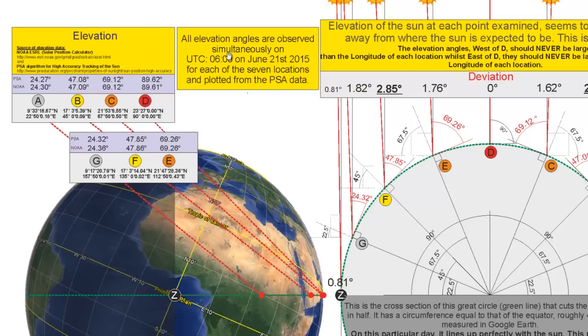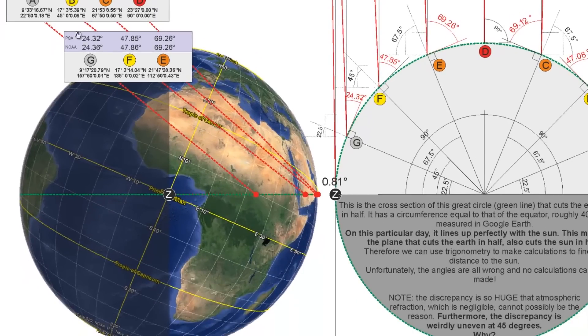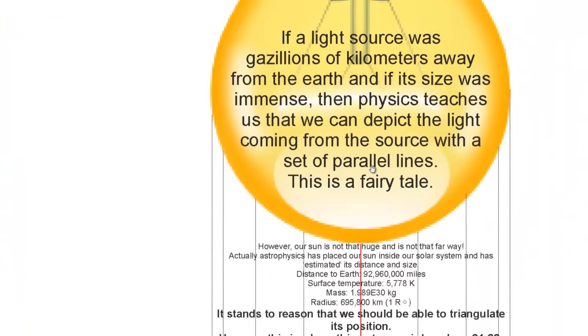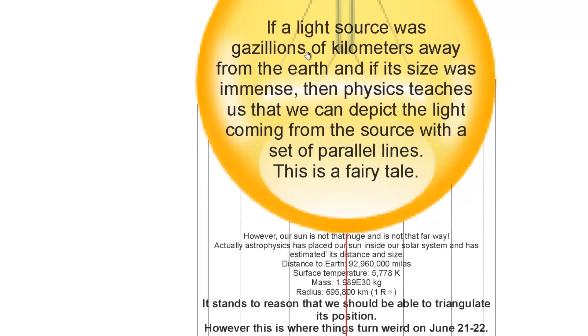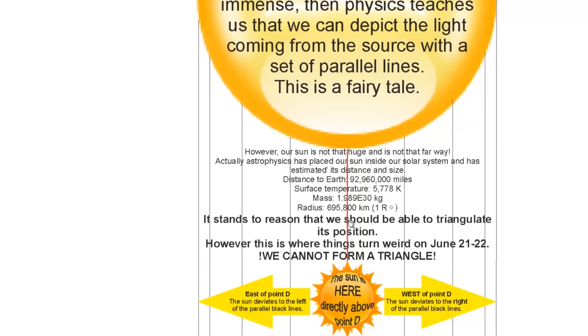As mentioned before, all elevation angles are observed simultaneously at 6 o'clock June 21st for each of the seven locations plotted. So we have these elevation angles and we plot them on our great circle from point A all the way around to G. Now from physics, we know that the light source was gazillions of kilometers away from the Earth and its size was also immense. And physics teaches us that we can depict the light coming from the source with a set of parallel lines. And this is, of course, a fairy tale.